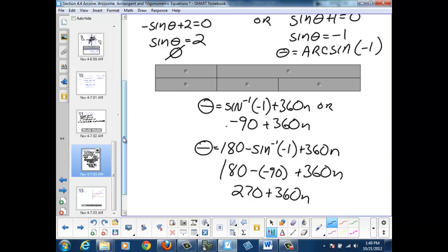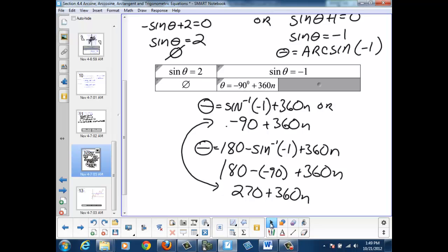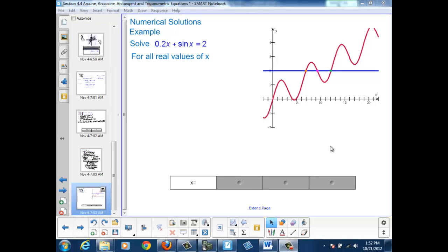And we can notice that negative 90 and 270 are coterminal angles. So our solutions, sine of theta equals 2 gives us an empty set, but when the sine of theta equals negative 1, we can say negative 90 plus 360n or 180 minus negative 90 plus 360n. But we can also recognize that those two solutions are describing the same angle or coterminal angles.